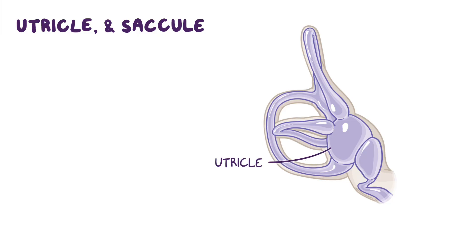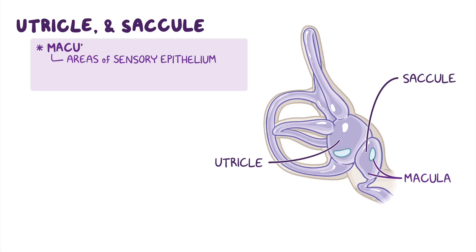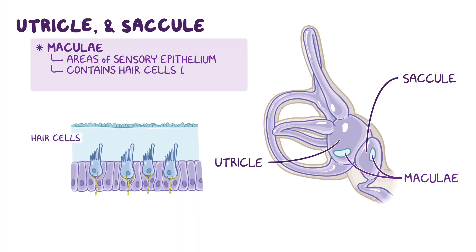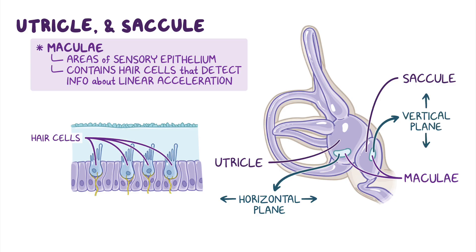Now, the utricle and the saccule both contain areas of sensory epithelium called maculae, which contain hair cells that detect information about linear acceleration. The hair cells in the utricle detect movements in the horizontal plane, while those in the saccule detect movement in the vertical plane. The macular hair cells are also innervated by the vestibular branch of the vestibulocochlear nerve.